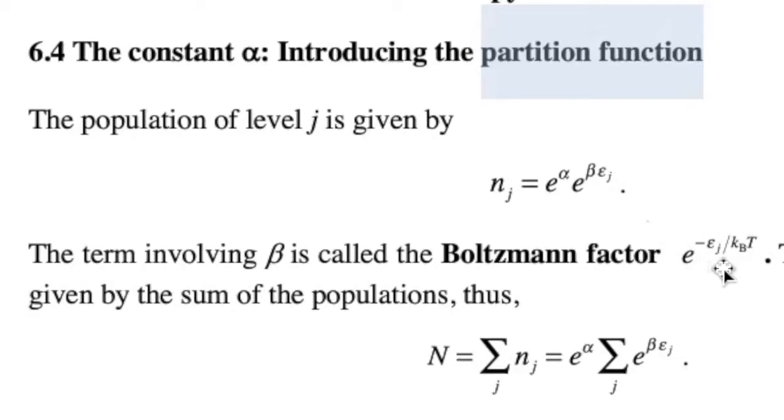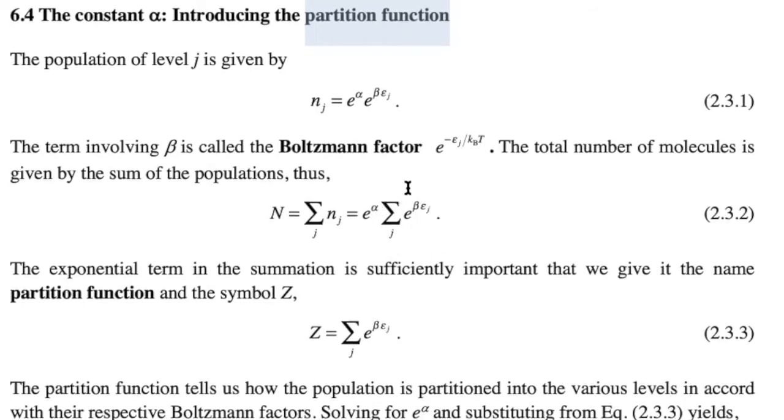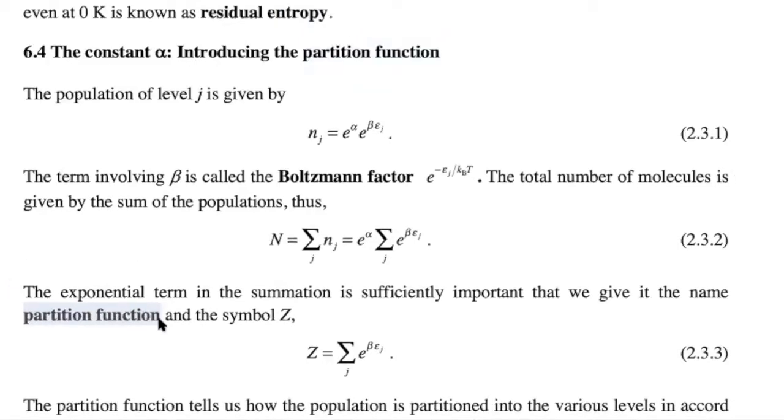The total number of particles is just the sum of all the populations. We know what the population is in an equilibrium distribution. It's given by this Boltzmann distribution, so we can substitute that in here. E to the alpha, that's a constant, it doesn't change with j, so we can pull it out of the summation. This term here, we're going to see that a lot. We're going to give it a name, and that indeed is the partition function Z, the summation over j of the Boltzmann factors, e to the beta epsilon of j, the energy of the state j.